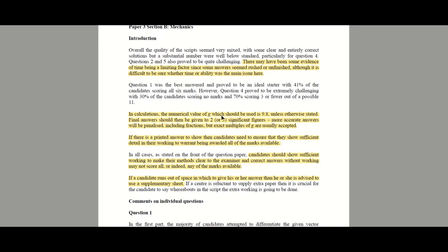In calculations, the numerical value of g which should be used is 9.8 unless otherwise stated. Final answers should be given to two or three significant figures. More accurate answers will be penalised including fractions, but exact multiples of g are usually accepted. If there is a printed answer to show, candidates need to ensure they show sufficient detail in their working to warrant being awarded all the marks. Correct answers without working may not score all or any of the marks available. If a candidate runs out of space, use a supplementary sheet.